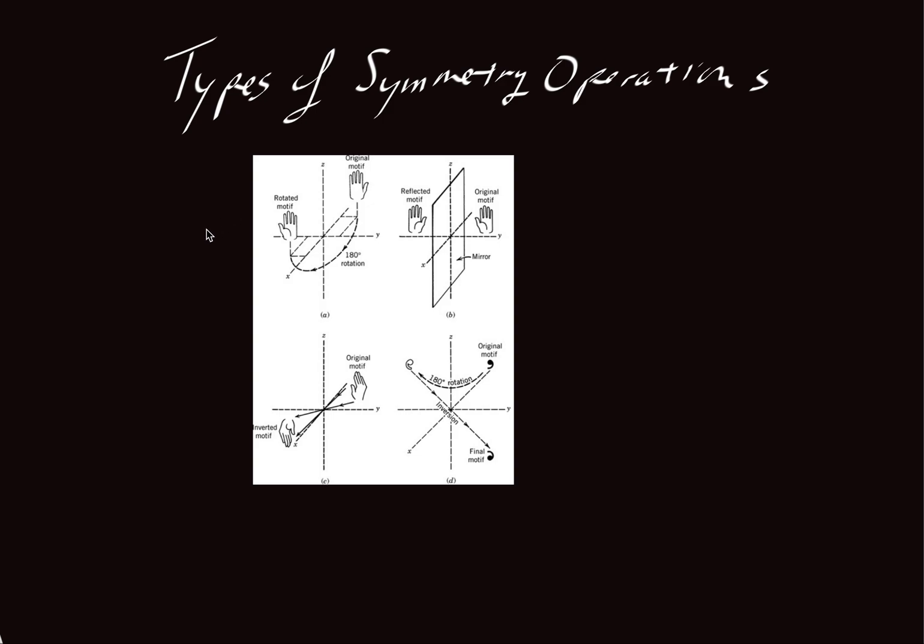So the first one that is shown here in the upper right hand corner, this is rotation. And so in this case we have a hand and that hand is being rotated around this y-axis here and it's being rotated 180 degrees. And by rotating it we get another hand here.